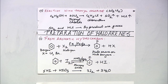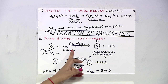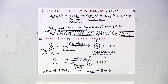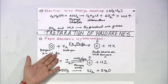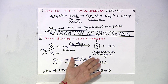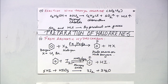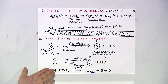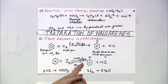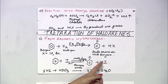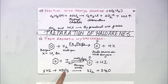For preparation of haloarenes, benzene is reacted with halogens such as chlorine or bromine in presence of Fe and FeCl3, giving halobenzene — bromobenzene or chlorobenzene — plus HX. When reacting with iodine in presence of HNO3 and HIO3, you get iodobenzene plus HI. The HI obtained reacts with HIO3 to regenerate iodine, allowing the reaction to continue.